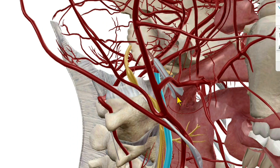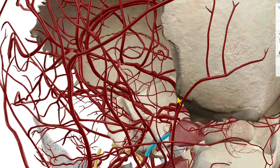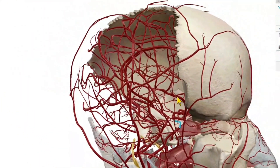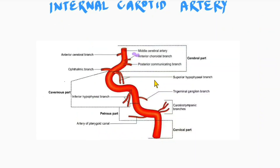The internal carotid artery has four parts: the initial cervical part, then the petrous part, then the cavernous part, and the remaining one is the cerebral part. This is the internal carotid artery shown from a lateral view, with anterior side, posterior side, superior, and inferior.